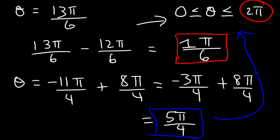So now you know how to find a coterminal angle. If it's too high, subtract by 360 to bring it between 0 and 360, or subtract by 2 pi. If it's too low, add 360 if it's in degrees, or add 2 pi if it's in radians.